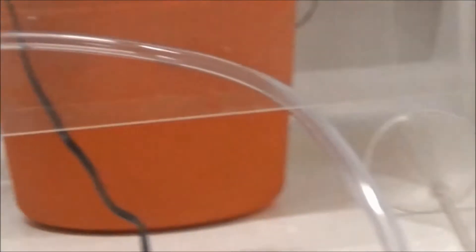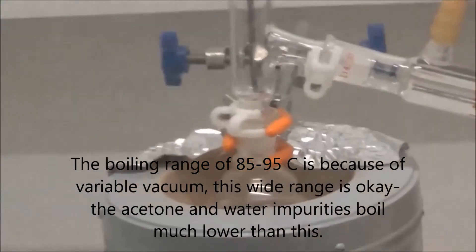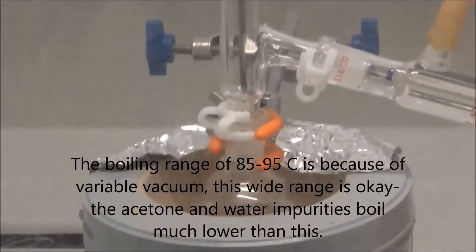Next, the liquid was transferred to a smaller flask and vacuum distilled. The product was collected between 85 and 95 Celsius, at around 30 torr.